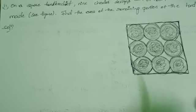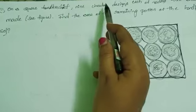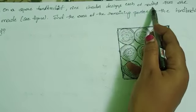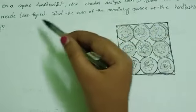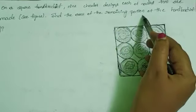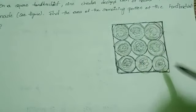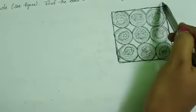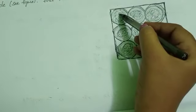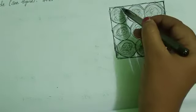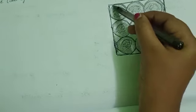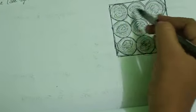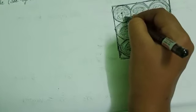Next, question 11. On a square handkerchief, nine circular designs each of radius equal to 7 centimetres are made. Find the area of the remaining portion of the handkerchief. This is the handkerchief in square shape, and the designs are circular in shape.